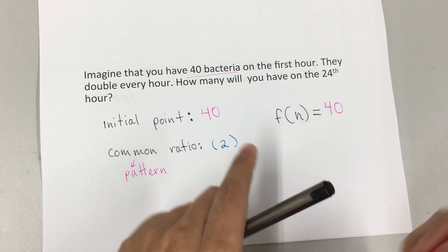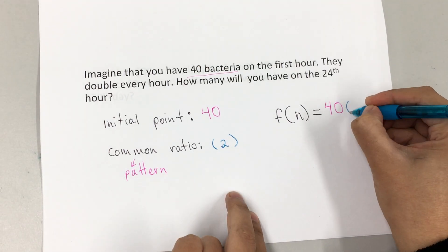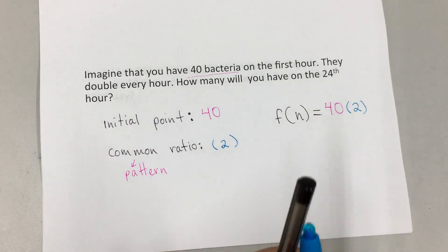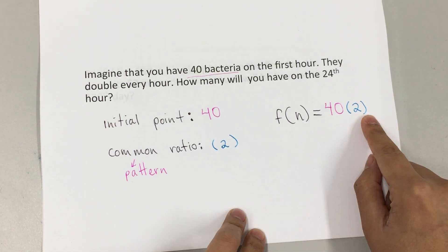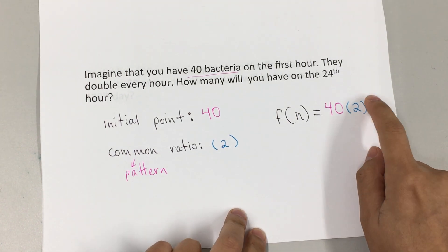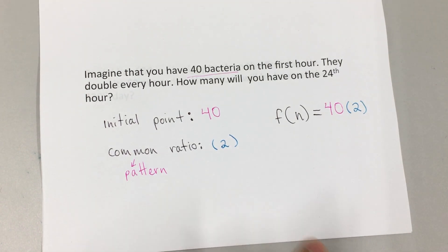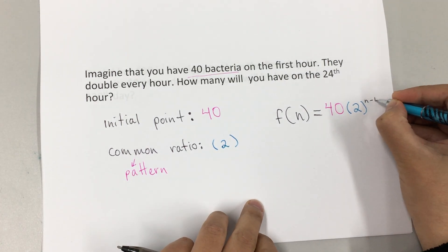The common ratio, which is we're going to multiply by 2. Remember that when we multiply, then we put n minus 1, but it's going to be as a power. So that's going to be n minus 1.